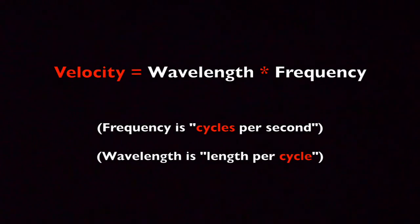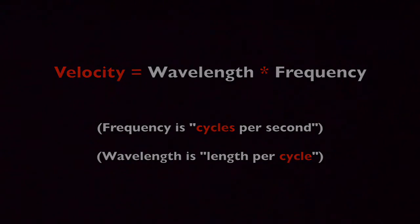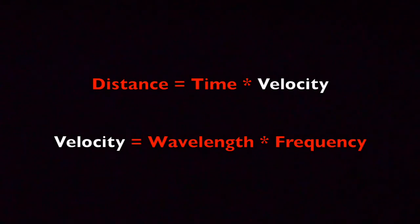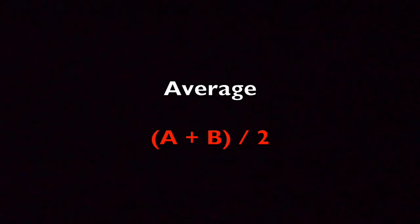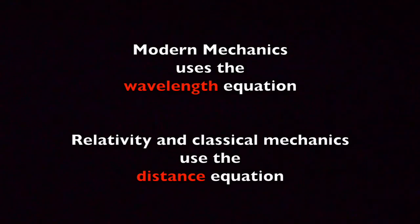This equation is velocity equals wavelength times frequency. Notice that the distance and wavelength-based equations will both find velocity if you know two other values. But the equations will behave differently when expressions are combined. Mathematically, we add when we use the distance equation and we average when we use the wavelength equation. And this is why modern mechanics makes a different prediction than relativity.